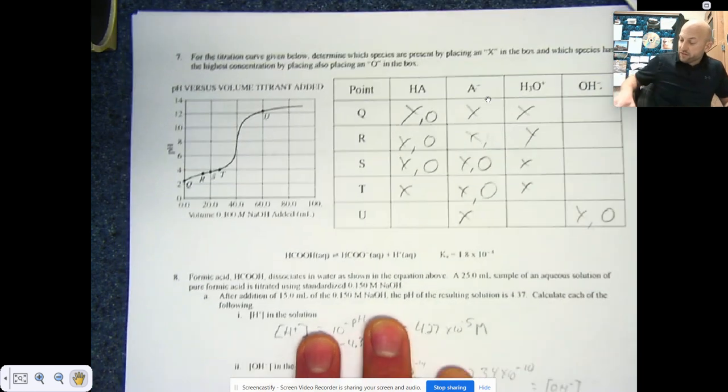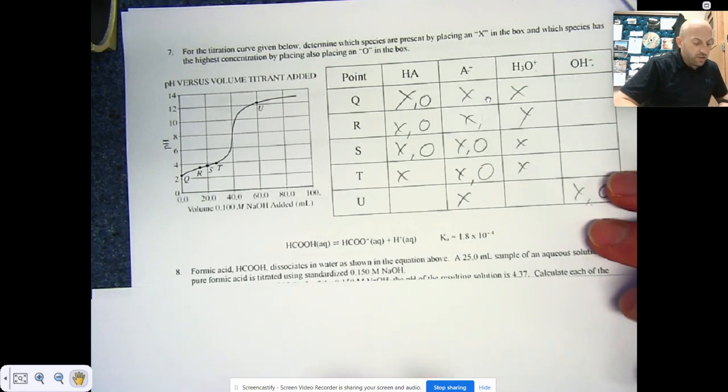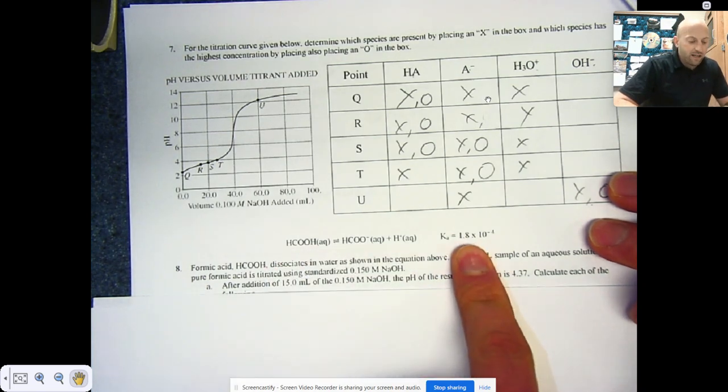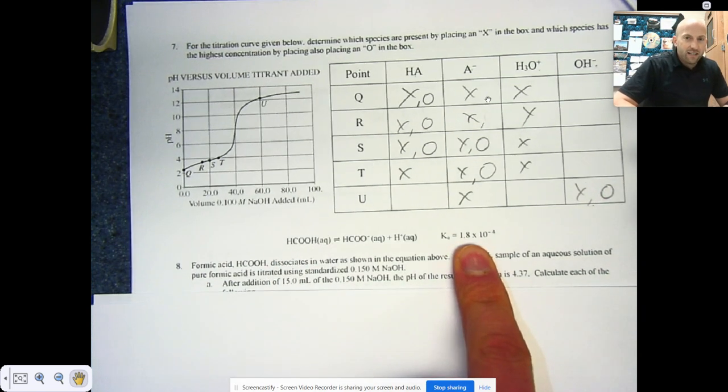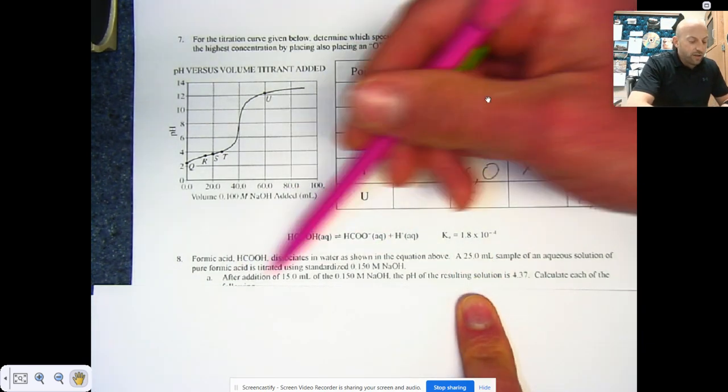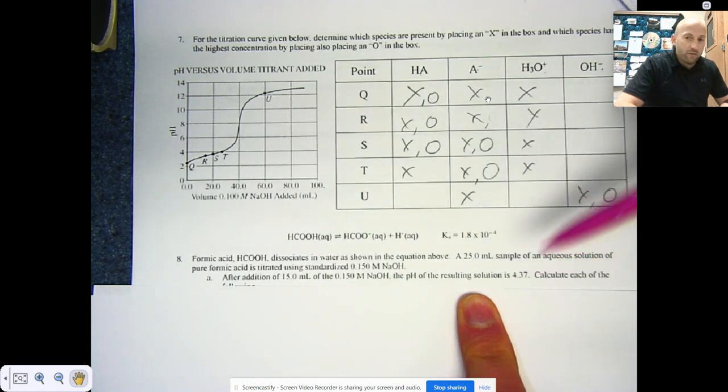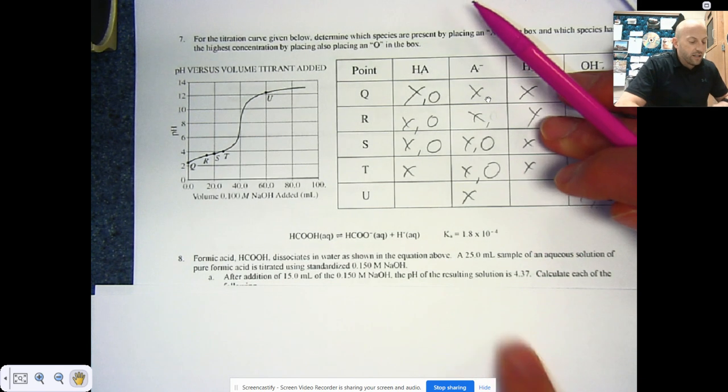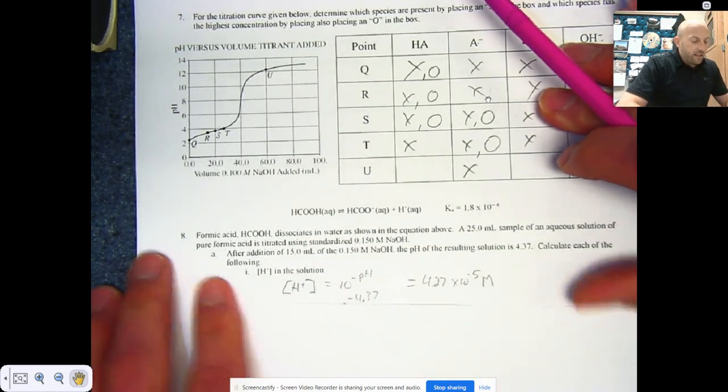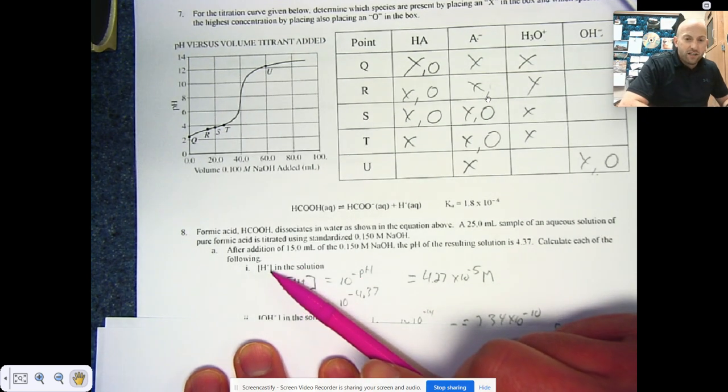Now number eight, I haven't done through all of this but I think you should be able to get started with this. Formic acid, this dissociates in water as shown in the equation above. It gives you the equation, it gives you the equilibrium constant. So now this is kind of like stuff we've been doing before, but what we're doing is a titration and it gives us the resulting pH. And remember from that we can figure out where our equivalence point, our halfway equivalence, and all of those things.